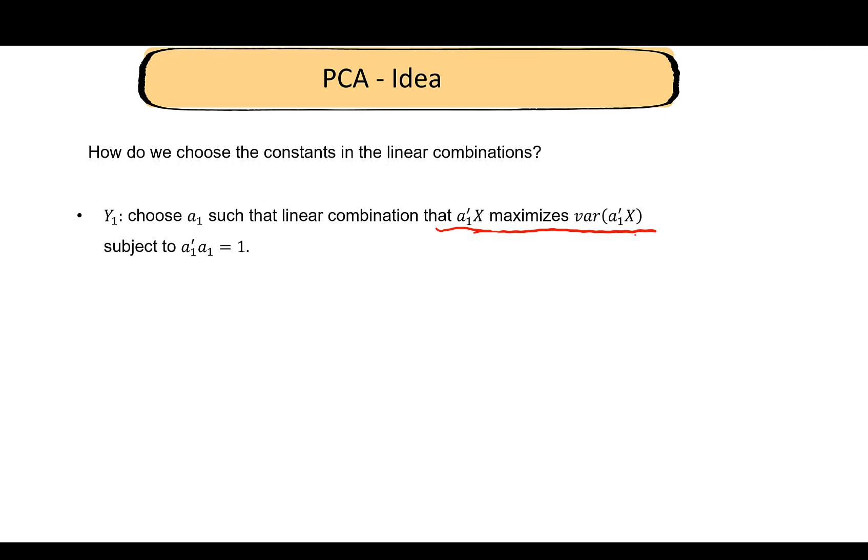We can keep on increasing variance by taking larger values for a, but we don't want to do that—that is not very informative. So we're going to put this additional constraint: we want to choose these constants such that a₁ᵀa₁, or the norm of the vector a₁, is 1. This stops us from artificially inflating the variance. So Y₁ is such that variance is maximized and it satisfies this condition, and Y₁ is the first principal component.